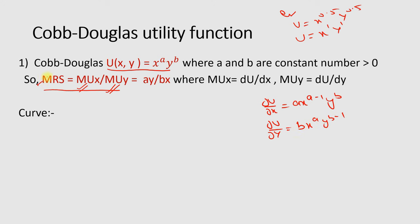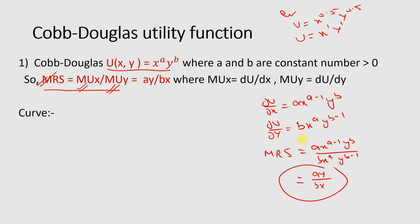If you put the results into the formula, it will come out in this form. If you solve it, at the end you will find this result. This can be used as a shortcut to find the marginal rate of substitution whenever you have been given a Cobb-Douglas utility function in the form shown.